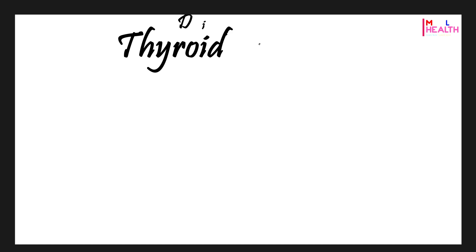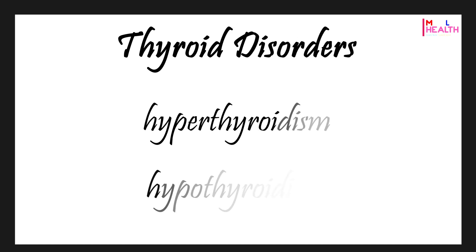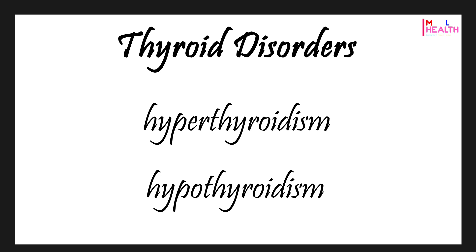For the most part, the symptoms of thyroid disease can be divided into two groups: those related to having too much thyroid hormone, known as hyperthyroidism, and those related to having too little thyroid hormone, known as hypothyroidism. In this video, we are going to discuss the most common symptoms of hypothyroidism.